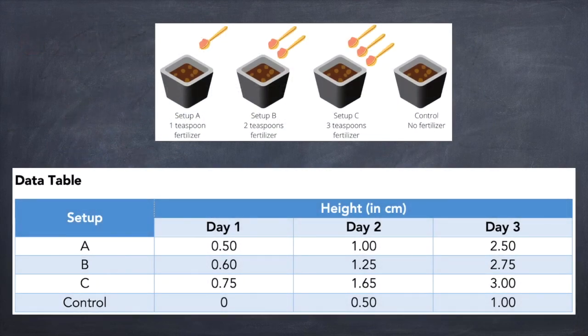The table summarizes the measured heights of the seedlings for three days. The first column lists the setups A, B, C and the control. While from second to fourth columns it has the list of height of the seedlings from day one to day three.